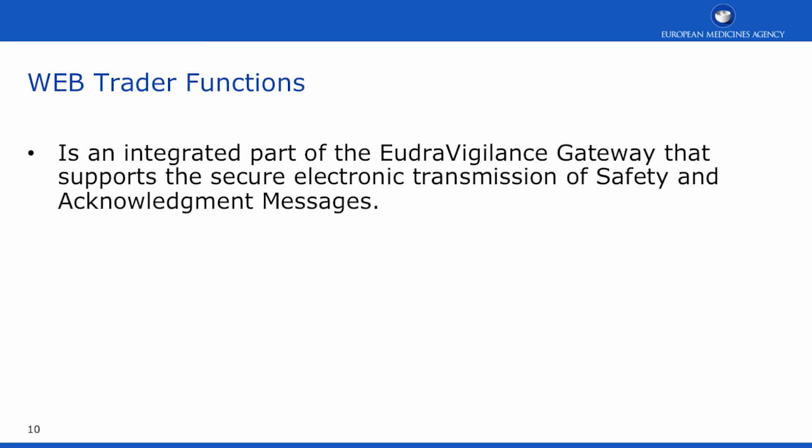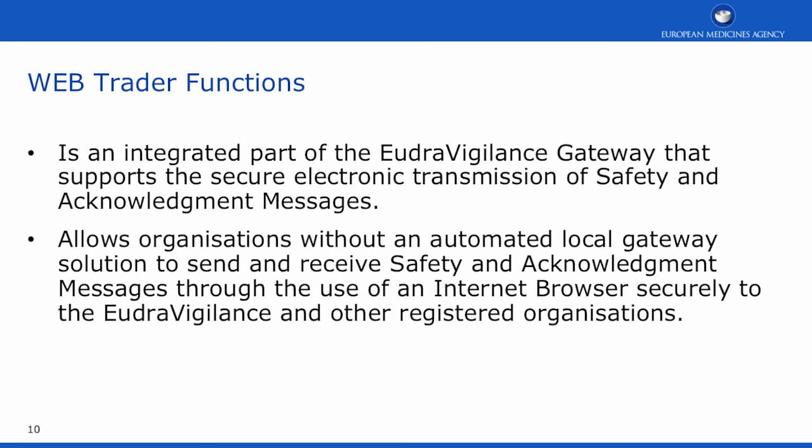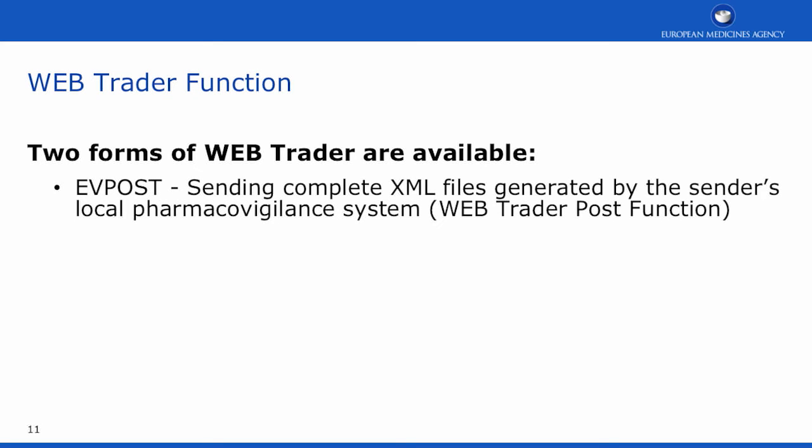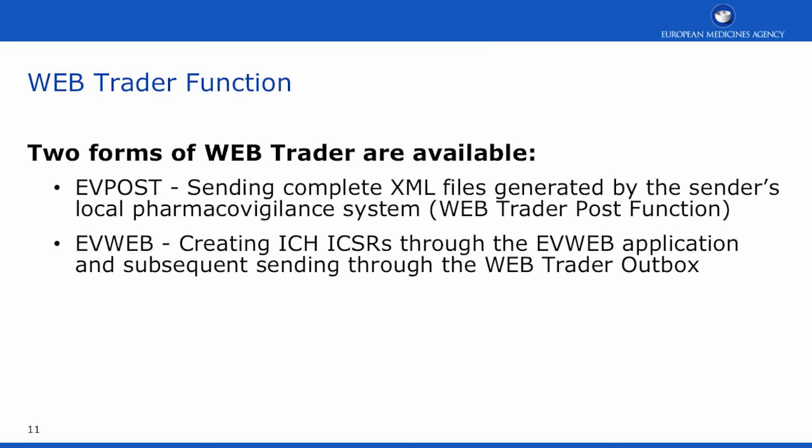The WebTrader function is an integral part of the E2B R3 gateway that supports the secure electronic transmission of safety and acknowledgement messages, allowing organisations without an automated local gateway solution to send and receive messages through an internet browser that connects to the EudraVigilance system securely. There are two forms of WebTrader available: the EVPOST function, which is for sending complete XML files generated by the sender's local pharmacovigilance system, and EVWEB, which is for creating ICH-ICSR messages through the EVWEB application and sending the files generated through the WebTrader Outbox.